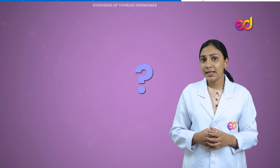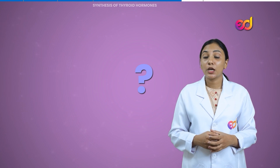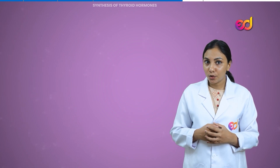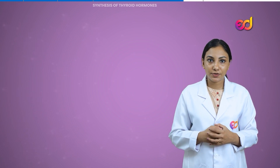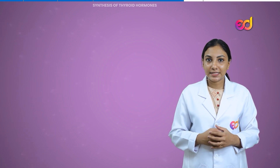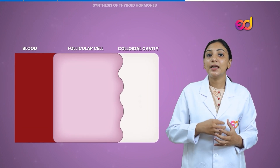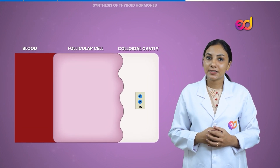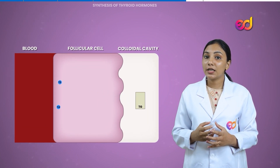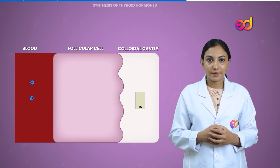When there is a need for thyroid hormones, the thyroglobulin itself is not released into the bloodstream. Instead, the hormones are first cleaved from thyroglobulin and are then released into the blood via the follicular cells.